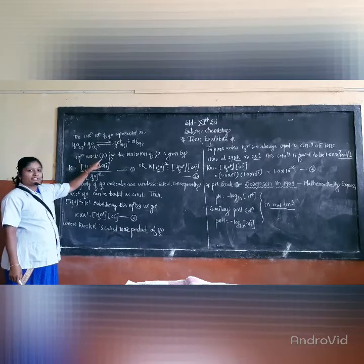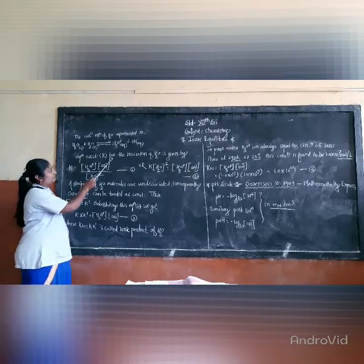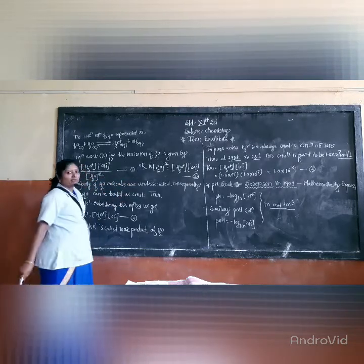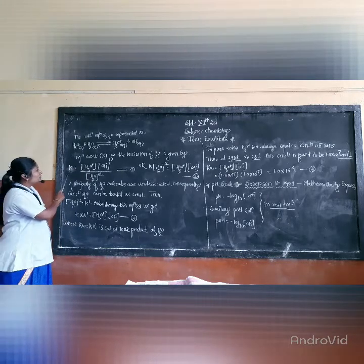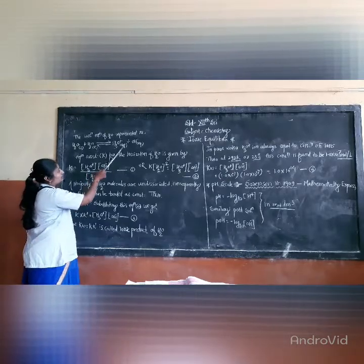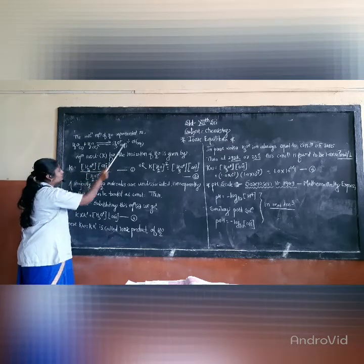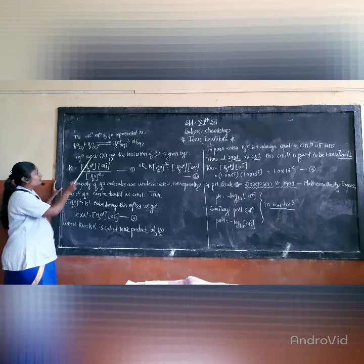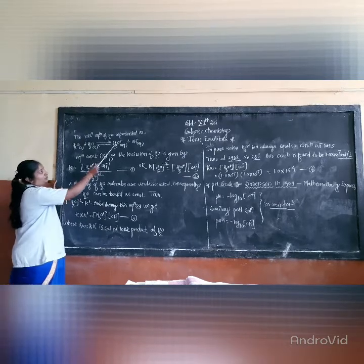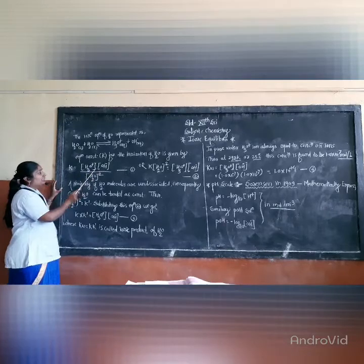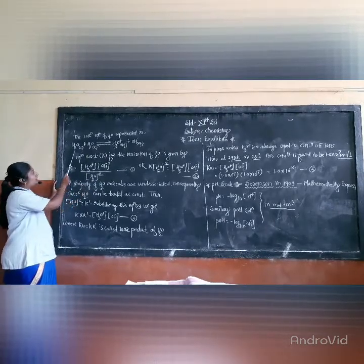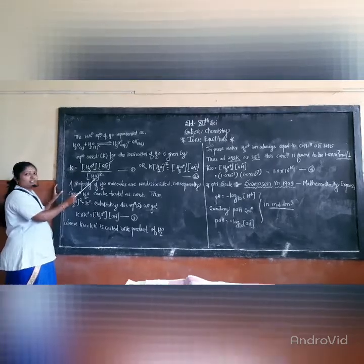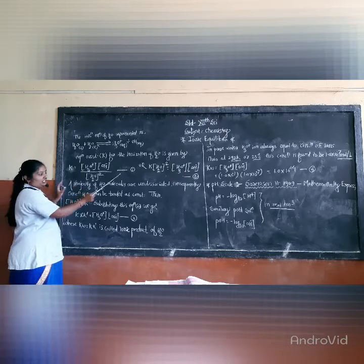The equilibrium constant K for the ionization of water is given by: K is equal to the concentration of H3O⁺ ions multiplied by the concentration of OH⁻ ions, divided by the concentration of H2O squared. This is equation number one.